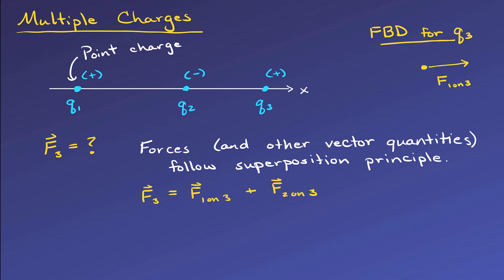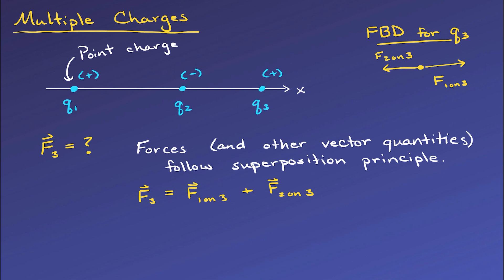Pretending q1 now doesn't exist, q2 and q3 are opposite charges, so q2 will pull q3 toward it in the negative x direction.